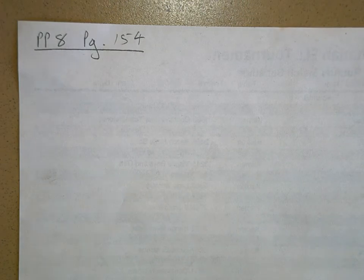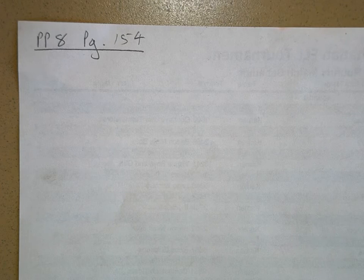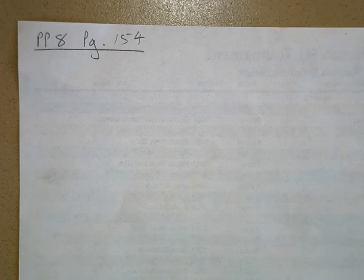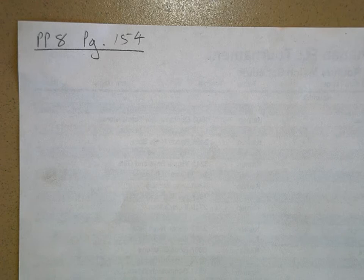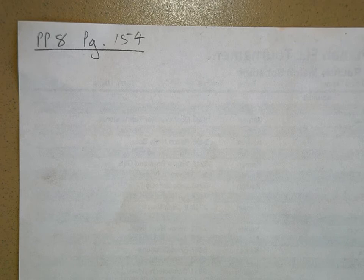Problem eight says after the skier on the 37 degree hill has been moving for five seconds, the friction of the snow suddenly increases, making the net force on the skier zero. What is the new coefficient of friction and how fast would the skier now be going after skiing for five seconds?